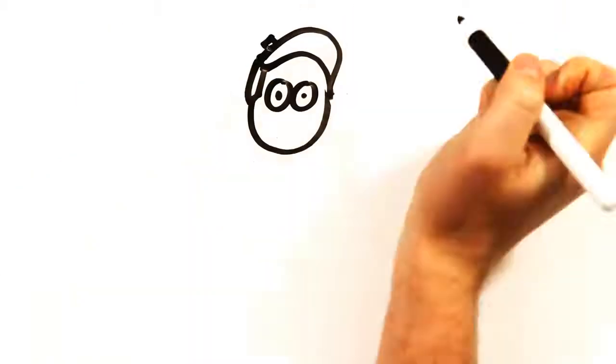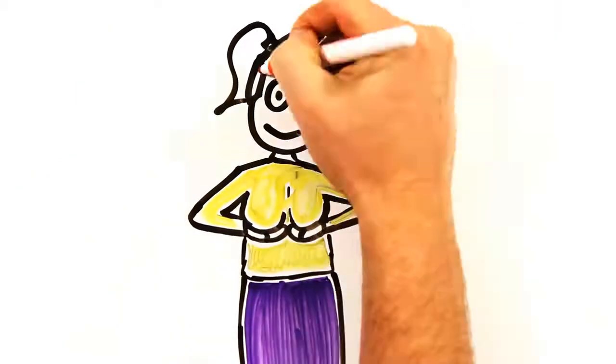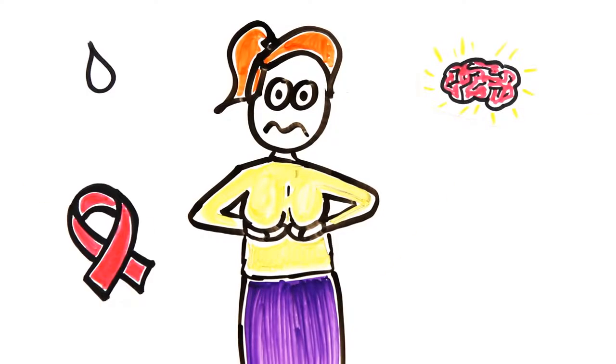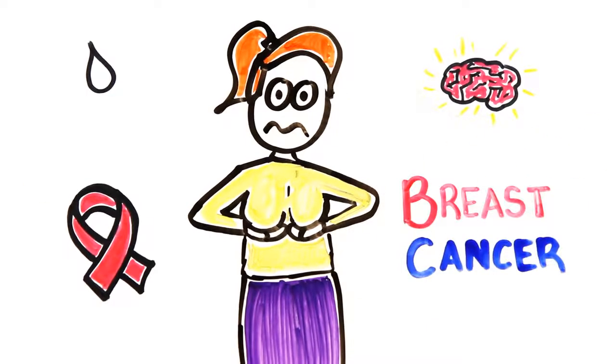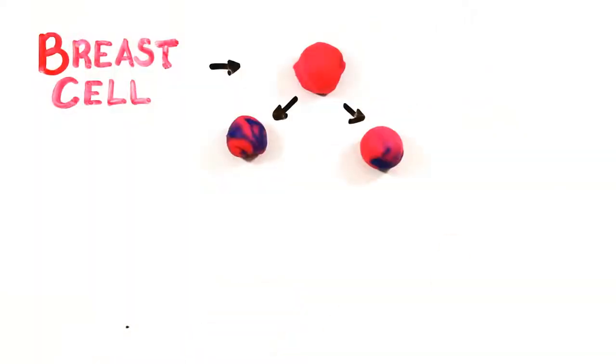Despite being an amazing source of both nutrition and pleasure, breasts are incredibly vulnerable. Breast cancer is the most prevalent form of cancer in North America. Cells that divide often are at a higher risk of mutation than cells that don't divide.